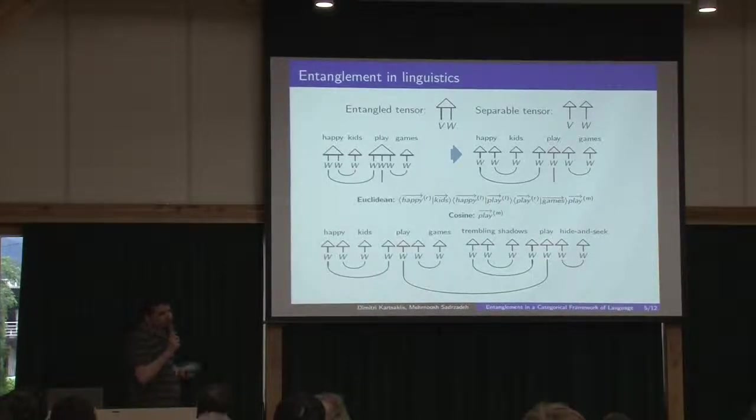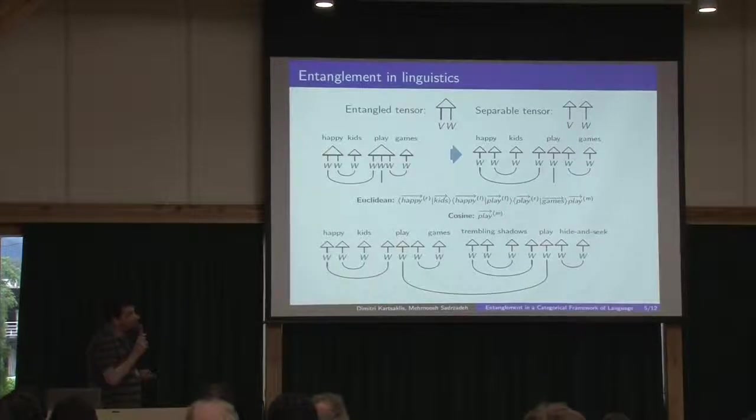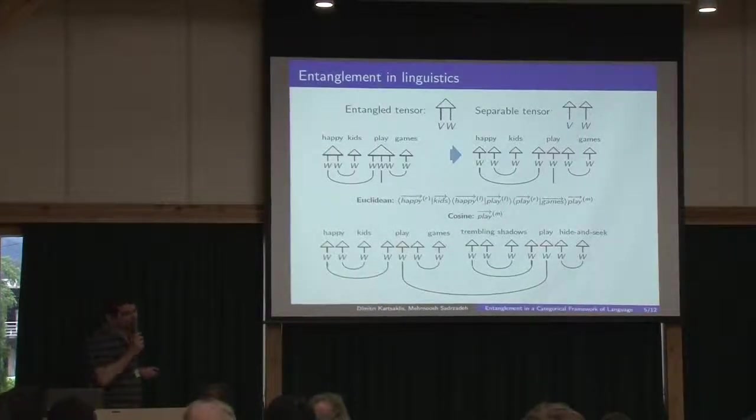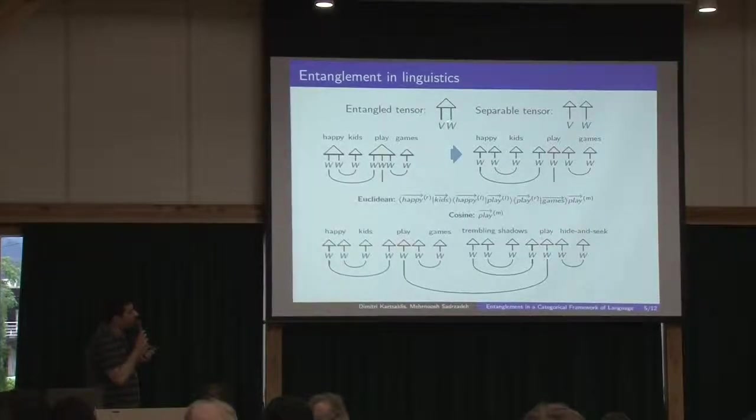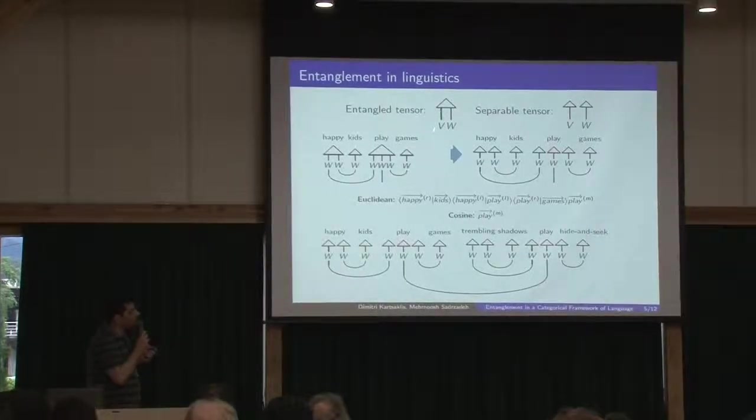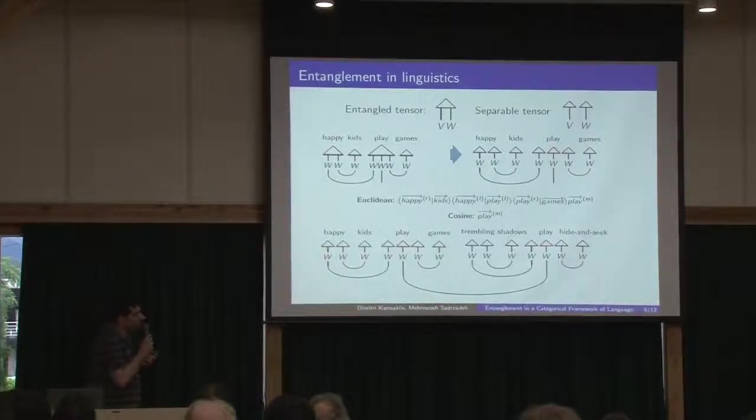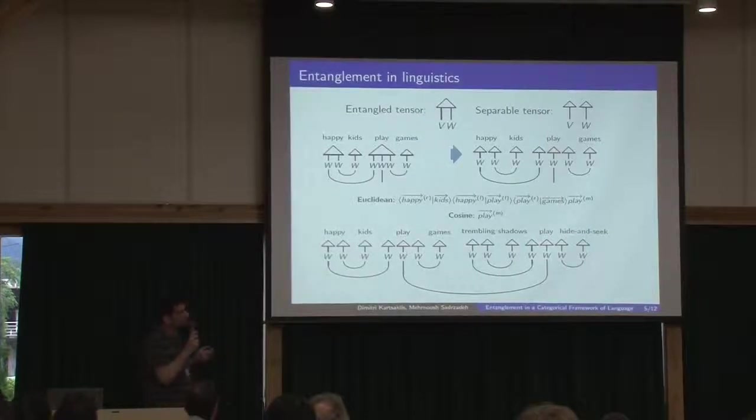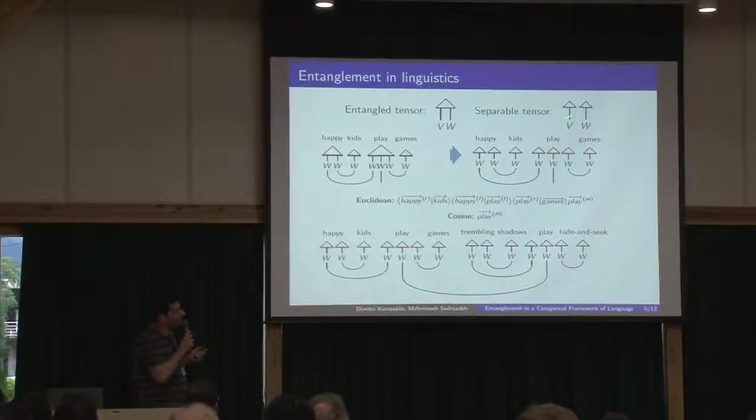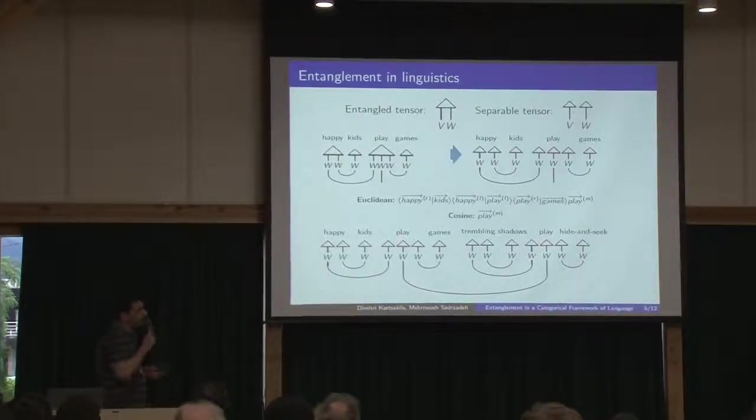So we have composition here and we have tensors. So entanglement starts to become important. Basically, in our graphical calculus here, an entangled tensor is just a diagram with two legs. And a separable tensor is a tensor that can be represented as a tensor of two vectors, a pure tensor. We use this notation.